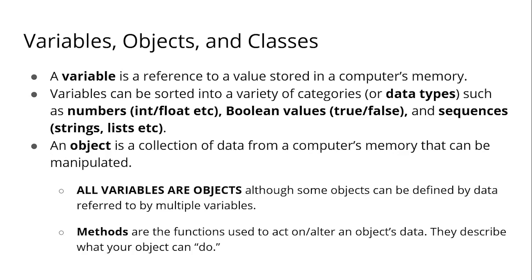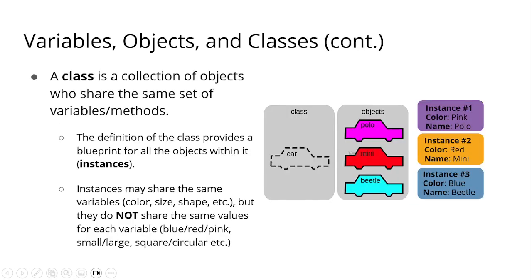Methods are the functions used to act on or alter an object's data, to describe what your object can do. Methods are functions. Next, a class is a collection of objects who share the same set of variables or methods. This is a class, these are the objects, and these are the instances.